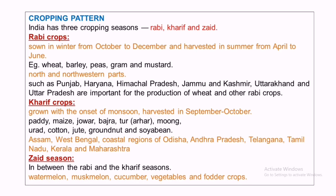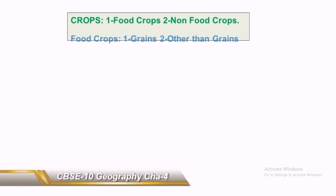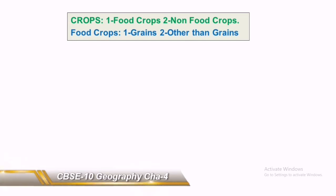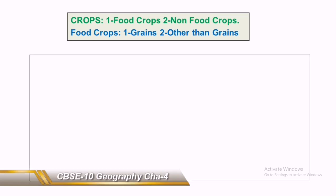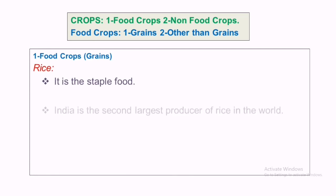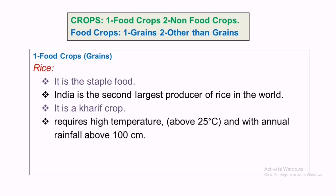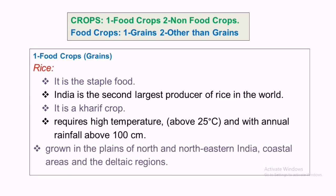Those are the three cropping patterns: Rabi, Kharif, and Zaid. The next topic is major crops. Crops are divided into food crops and non-food crops. Food crops are further divided into food grain crops and food crops other than grains. Rice is the staple food; India is the second largest producer of rice in the world. It belongs to the Kharif crop category, requiring a temperature of about 25 degrees Celsius and annual rainfall above 100 centimeters.